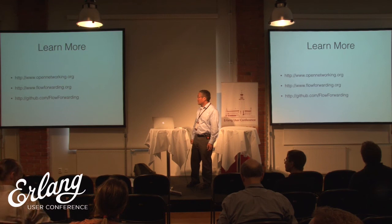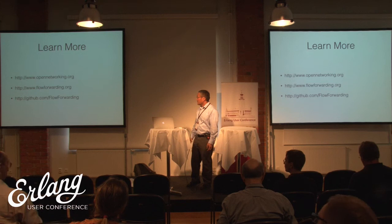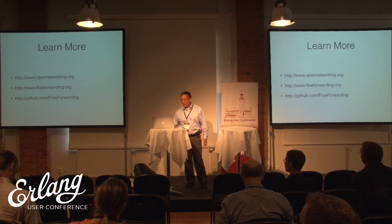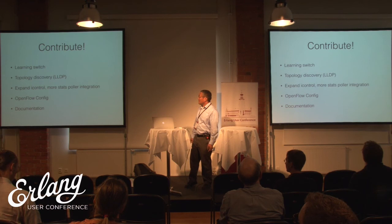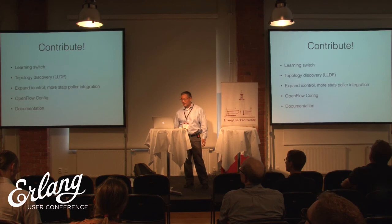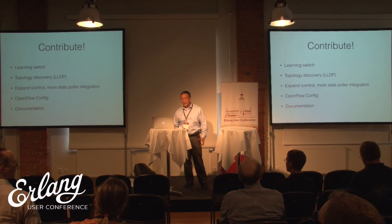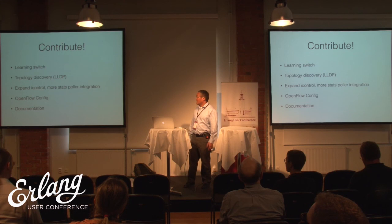If you want to learn more, all this code is checked into GitHub under the flow forwarding repository. You'll also find the LINC switch, Tapestry, and the other examples there. I'd like to encourage everybody to contribute, because we're at an early stage and any feedback about the APIs is welcome — you have the ability to really influence the direction things are going. Some ideas for things that might be interesting to add: a learning switch (we don't have that yet), some sort of lightweight topology discovery along the lines of LLDP, more capability to iControl (it's very limited right now), better integration for the stats pullers, improved flow identification since OpenFlow has no flow ID and flows are identified by the match set, and more documentation — particularly around how to formulate the messages.